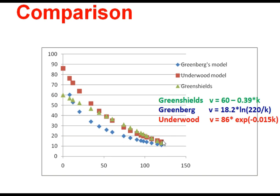Comparing the three models with the same data: the green data points represent the Greenshields equation — a straight line (e.g., V = 60 − 0.39 × K) intersecting both axes. The blue points show the Greenberg model, which goes asymptotic on the Y axis (speed becomes infinite at zero density), though it does give the jam density. The red points show the Underwood model, giving a free flow speed of about 86 km/h but going asymptotic on the X axis, so it does not yield a jam density.